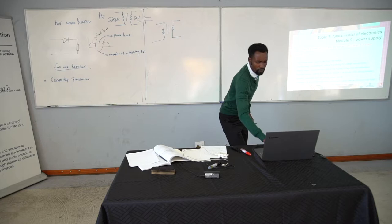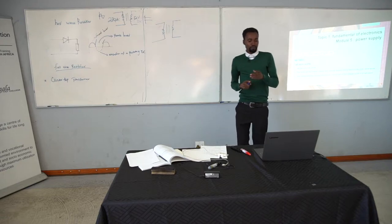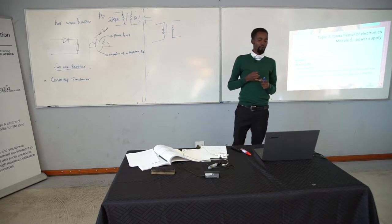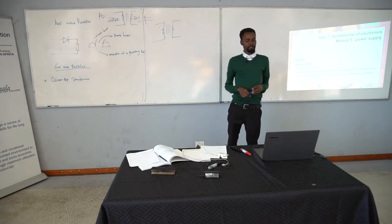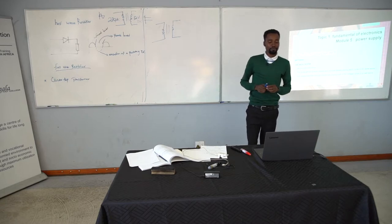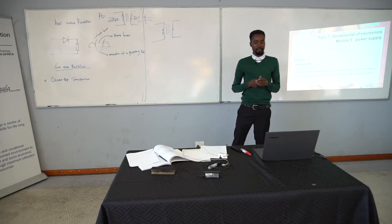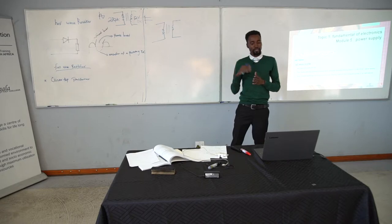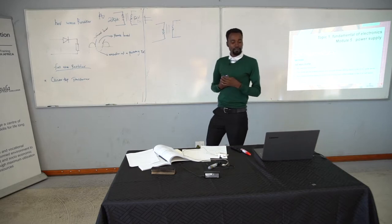Now we'll move to how the rectifier circuit operates. We have a half wave rectifier and we also have a full wave rectifier. Starting with the half wave rectifier: we use only one diode. The diode will be forward biased and reverse biased during each cycle of an AC sine wave, and the current will flow through the circuit only during half of the voltage cycle.